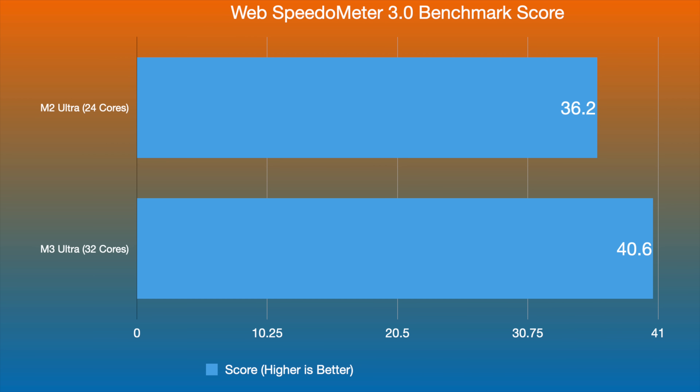Moving to the Web Odometer 3.0 benchmark scores, we got 36.2 for the M2 Ultra and 40.6 for the M3 Ultra — a slight improvement, but not a lot. If you already have an M2 Ultra, that's worth noting. The M4 Max again beat the M3 Ultra here, scoring around 46, which speaks to the fact we're dealing with older technology in the M3 Ultra despite its extra cores.